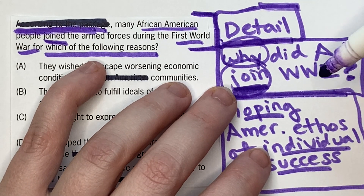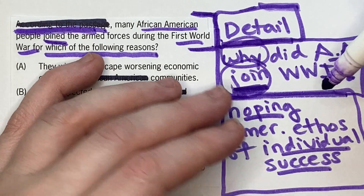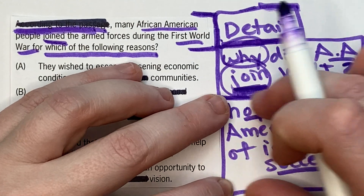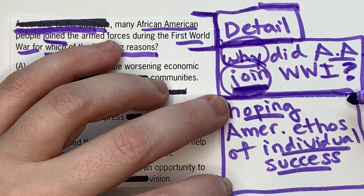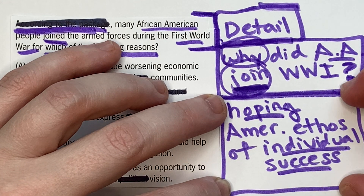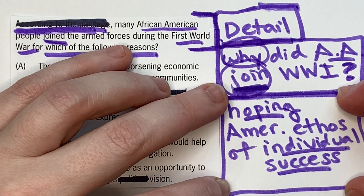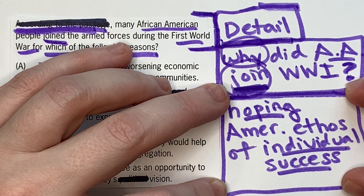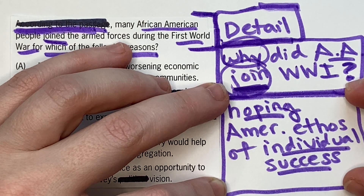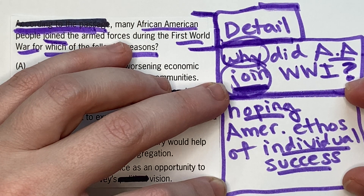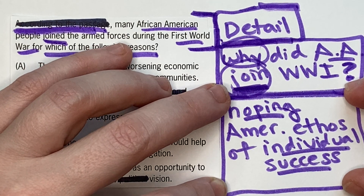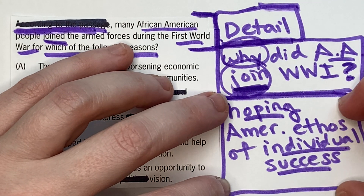They start talking about African Americans joining at the end of the first paragraph, and the motivation comes in the first sentence of the second paragraph. The last thing you want on your scratch paper for every reading comp question is your prediction. Once you find the relevant information in the passage, read it and summarize it on the scratch paper. The first sentence of the second paragraph reads: 'Hoping to participate in the traditional American ethos of individual success, many African American people entered the armed forces with enthusiasm, only to find themselves segregated from white troops and subjected to numerous indignities.'